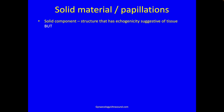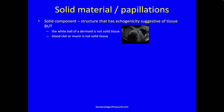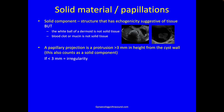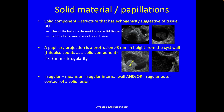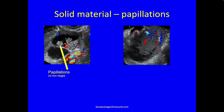Solid material and papillations: a solid component is a structure with echogenicity suggestive of tissue, but the white ball of a dermoid and blood clot or mucin are not solid tissue. A papillary projection is a protrusion of more than three millimeters in height from the cyst wall — this also counts as a solid component. If it's less than three millimeters in height it's called an irregularity. Irregular means an irregular internal wall and/or an irregular outer contour of a solid lesion. So all papillations are solid, but not all solid material is a papillation.